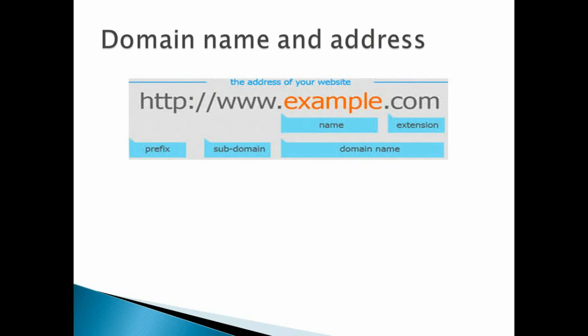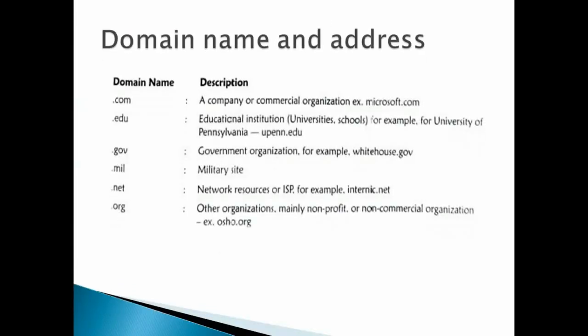Addresses are IP addresses — some numbers and digits. In domain name extensions: .com is for commercial organizations like microsoft.com or youtube.com; .edu is for educational institutes; .gov is for government organizations like whitehouse.gov; .mil is for military sites; .net is for network resources like internic.net.